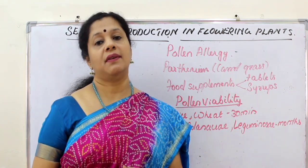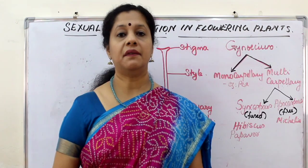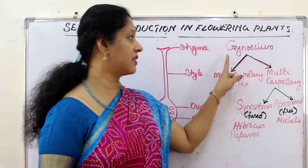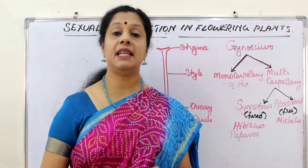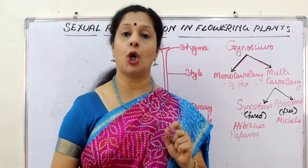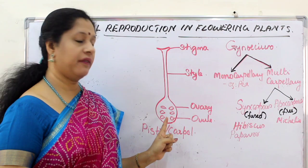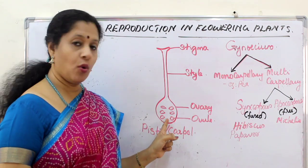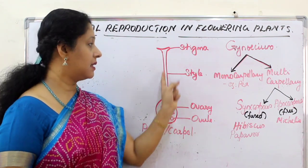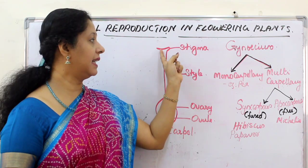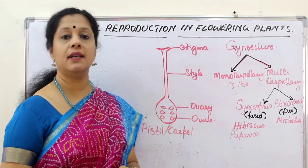Now we will move on to the female reproductive structure. The female reproductive part of a flower is called the gynoecium. The gynoecium has its individual unit called a pistil or carpal. A pistil or carpal consists of three parts: the ovary, which is the basal swollen portion; the style, which is the tube; and the stigma, which is the flat disc-shaped structure on top.